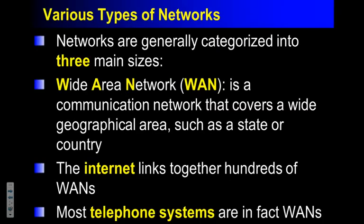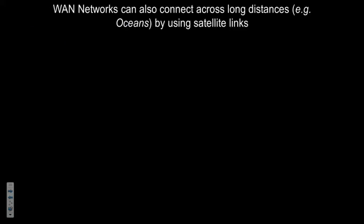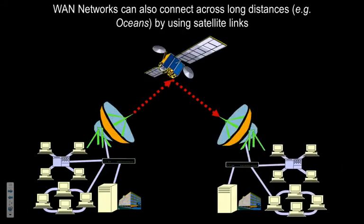There are three main sizes of networks. First, the wide area network — acronym WAN — which covers a large geographical area, such as an entire province or country. The internet is essentially a collection of wide area networks; for example, the MTS telephone system is a network covering the entire province of Manitoba. Wide area networks communicate across geographical distances, often using satellite linkage or even cables running across the ocean floor.